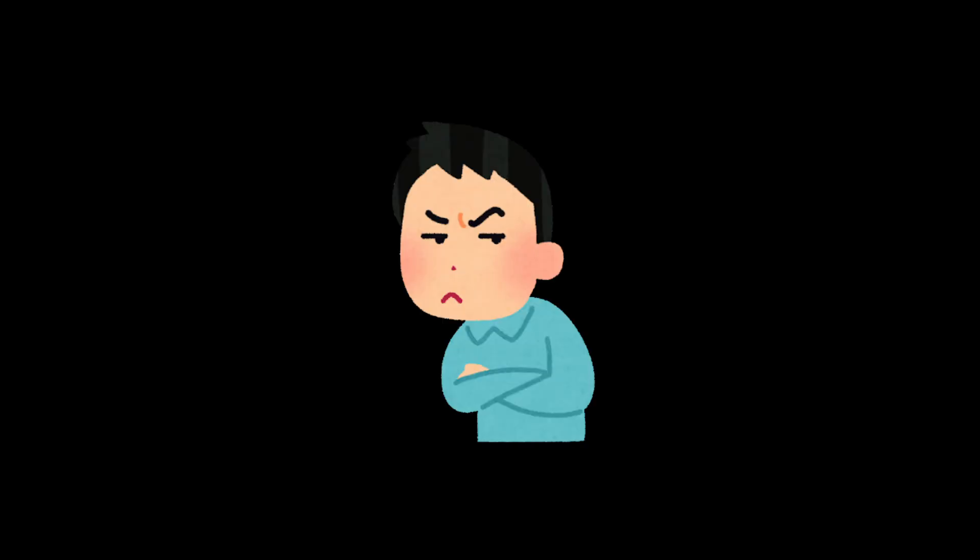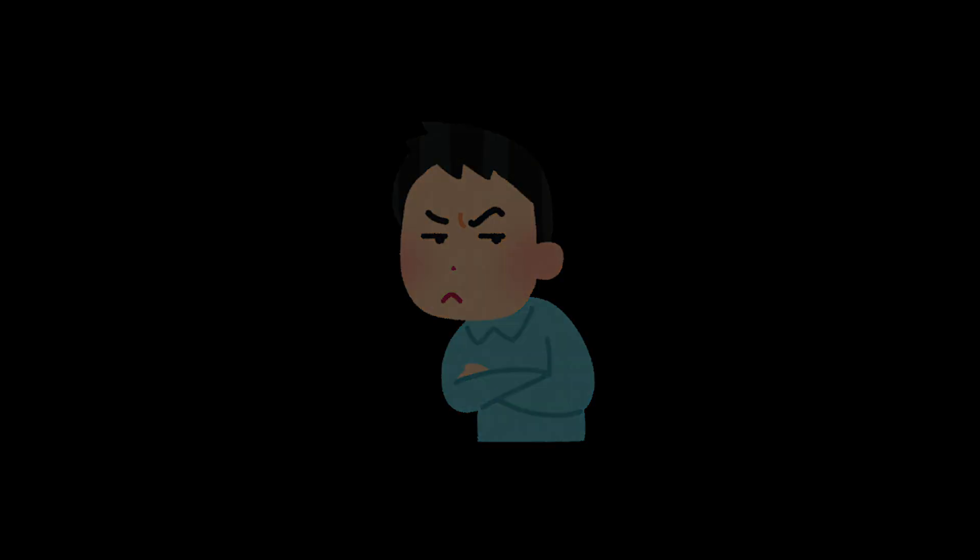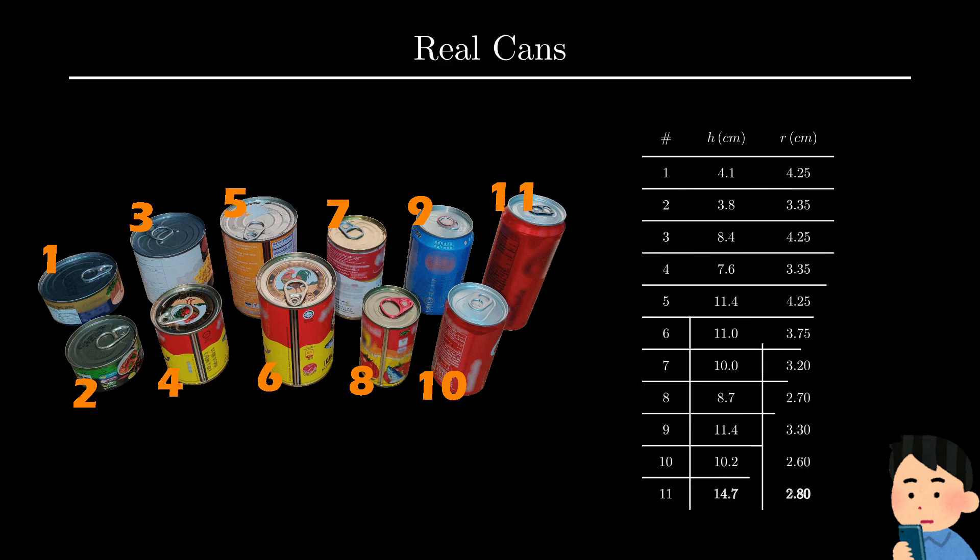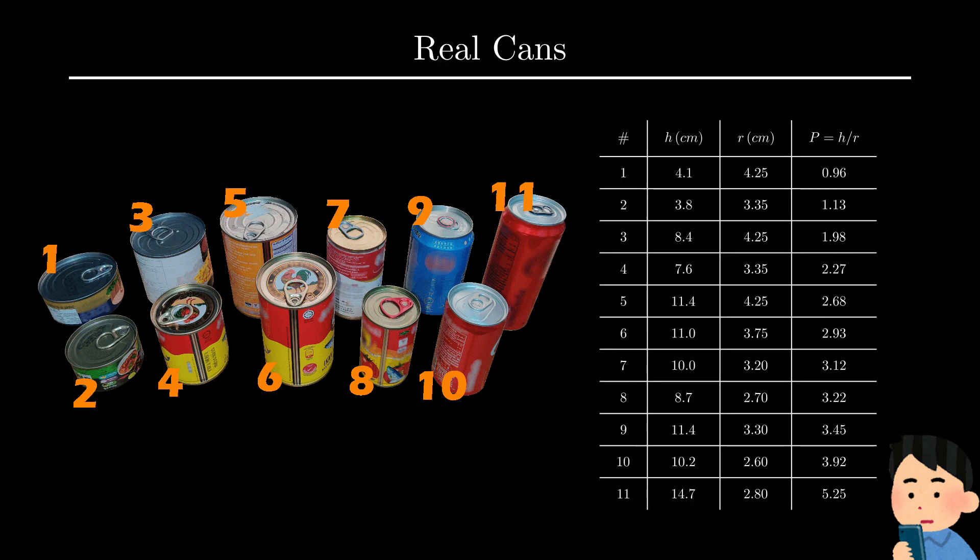We are almost done. The only thing left to do now is to check if your solution is actually correct. Once we have the solution, we want to see if it actually matches with the reality. Because if it doesn't, then the solution is kinda useless, right? So, as a sanity check, I went and bought a bunch of canned food I found in a local supermarket. Then I measured their radius and height, and used them to calculate the proportion. We can see that the values vary quite a lot, and most of them are quite far from 2, which is what our solution says they should be. Is that fine? Or does that mean our solution is complete garbage?